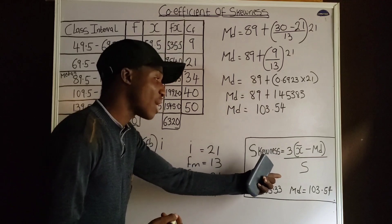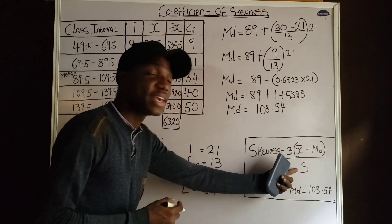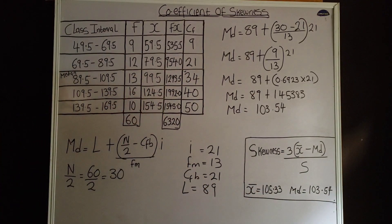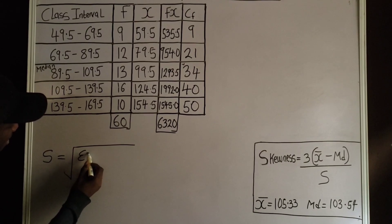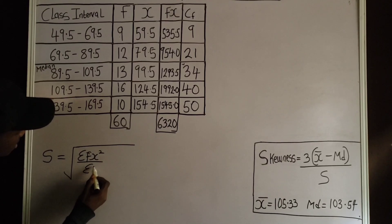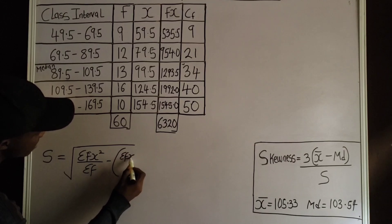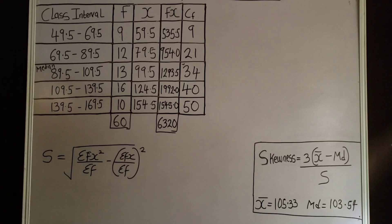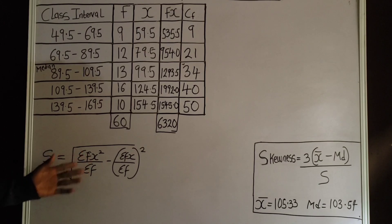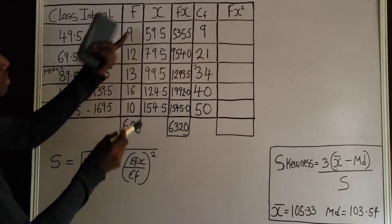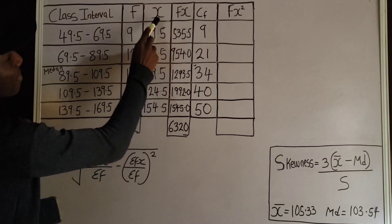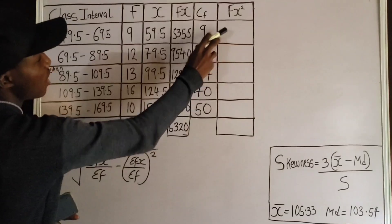Now let us calculate the standard deviation. The formula is: s equals the square root of (summation fx² over summation f) minus (summation fx over summation f) squared. From this formula I still need to get summation fx², so I add another column for fx². To get fx² values, I multiply each fx value by the corresponding midpoint x.